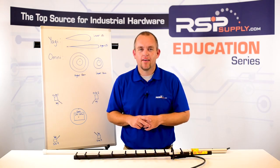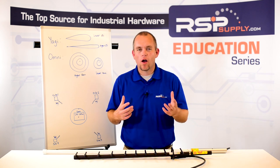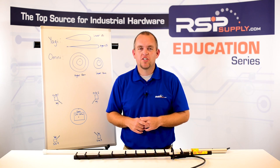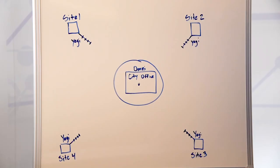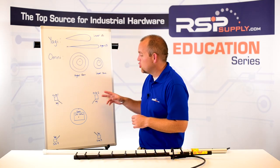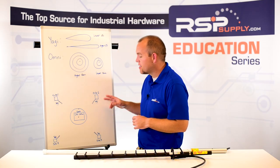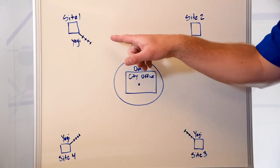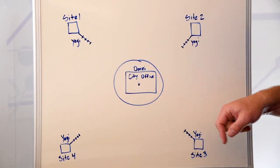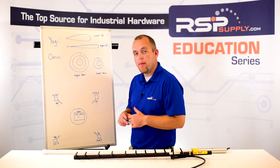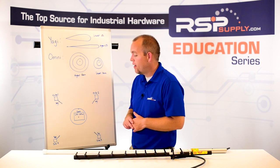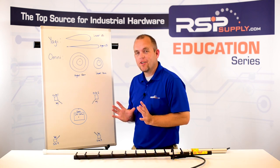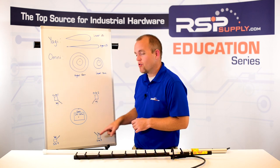The last thing to consider when selecting an antenna is which antenna to use — a Yagi or an Omni. Let's look at a practical industrial application that might help us determine which type of antenna we should use. Let's assume we have a city that wants to monitor its water system, with several remote sites located a certain distance from the city office. Knowing that the city office wants to communicate with all the remote sites, we would want to use either a master station radio or an access point radio, and we would also want to use an Omni antenna in that it can communicate in 360 degrees and send and receive data to all the different remote sites.